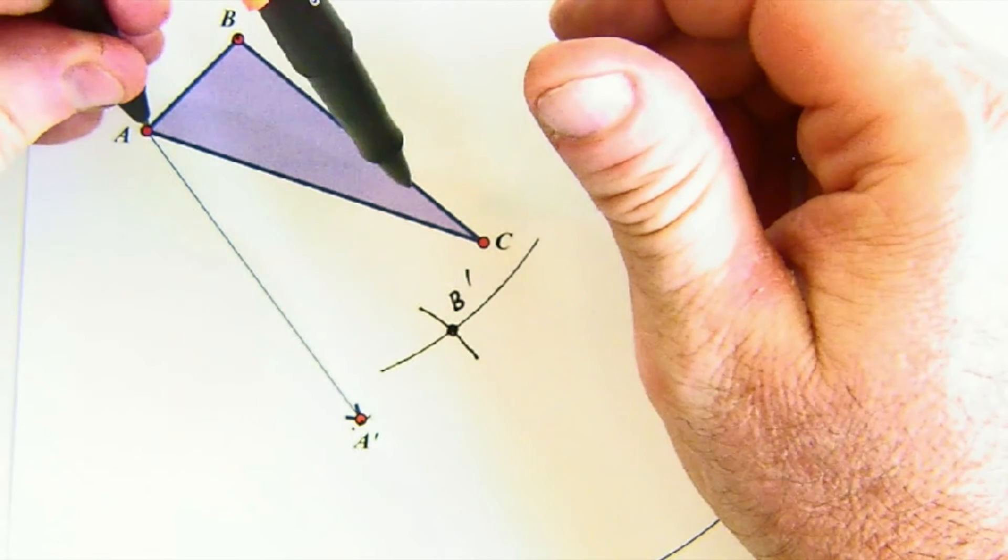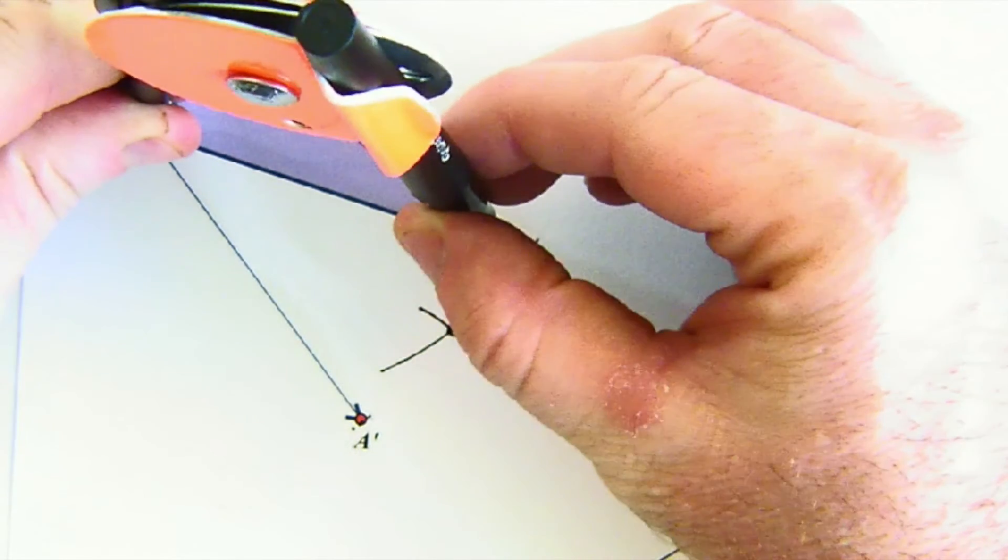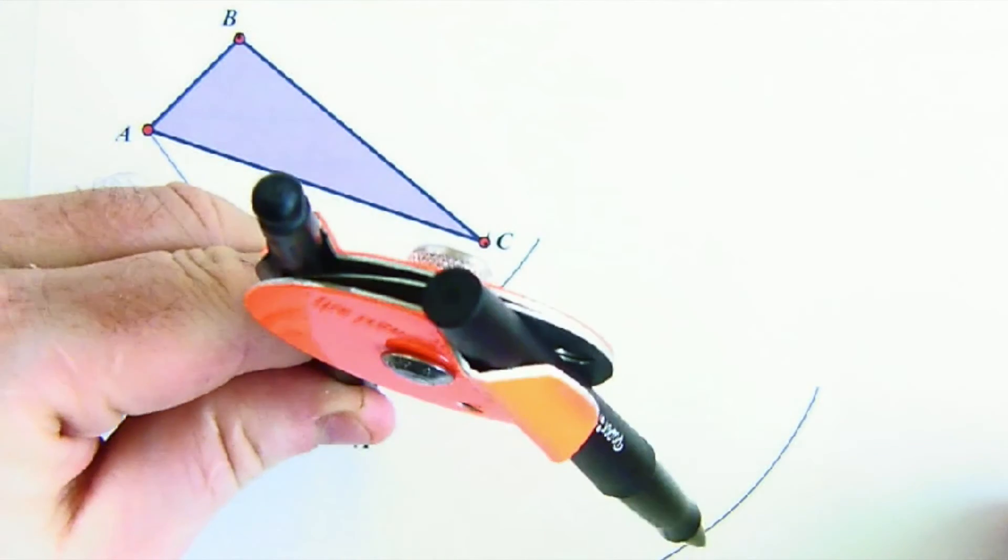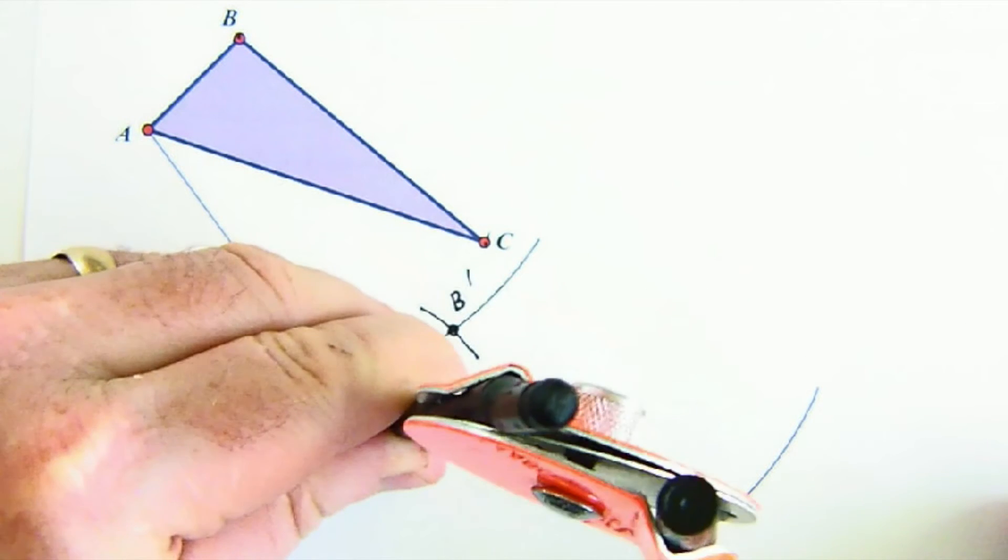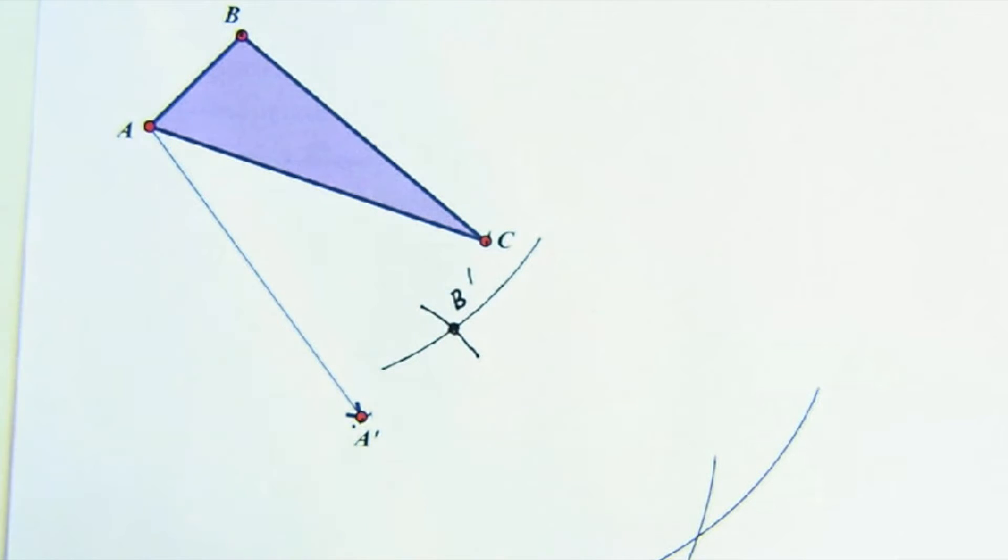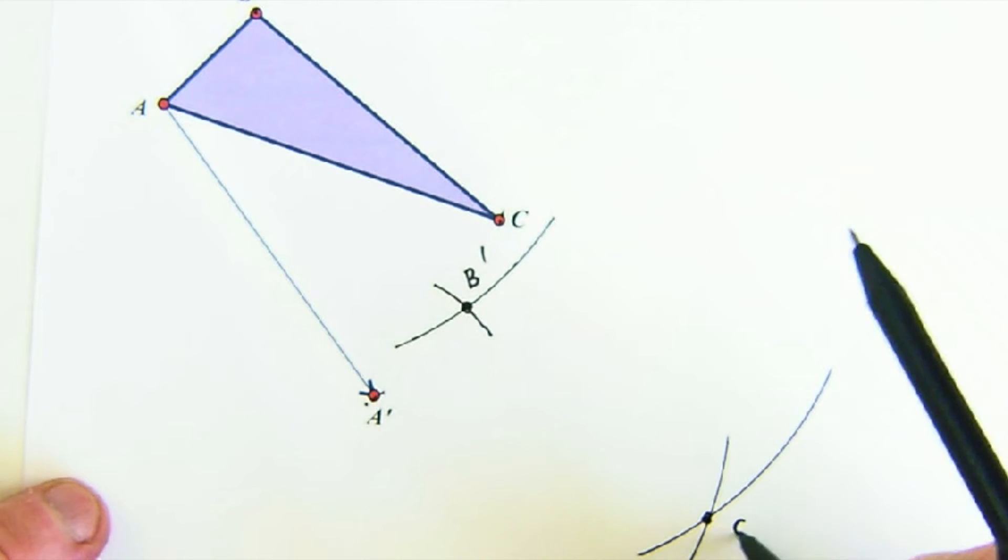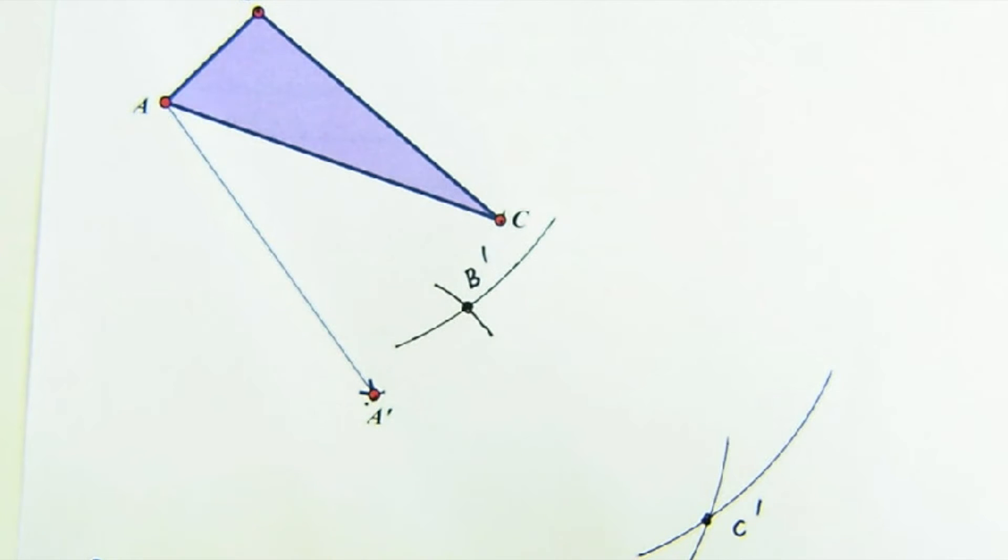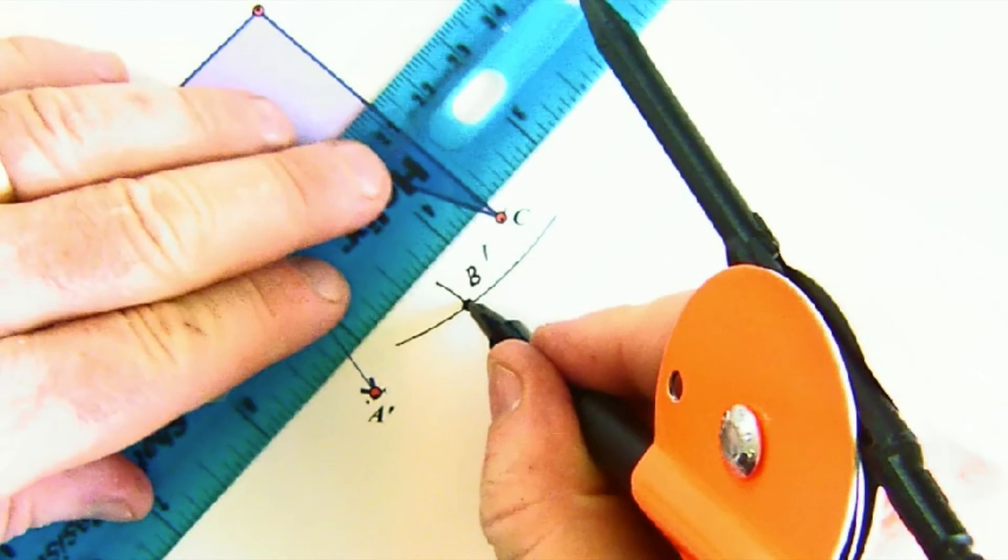You can do the same thing. Let's reference from A to C. That distance is a fixed distance, and when you're done translating, it would have to be that far away as well. And so this would be C'. Let's pull out our straight edge and connect the dots.